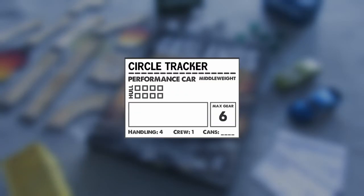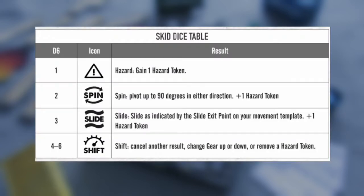Before finalizing your vehicle's move across the template, you are allowed to roll a number of skid dice. A vehicle can roll a number of skid dice equivalent to the number of its handling value. So in our case, the circle tracker would be able to roll four skid dice. Each skid dice rolled will give you a result, and you can use those results to do a number of things to your vehicle. Most of the time, you will be looking for shift results, as shift results allow you to change gear. A shift result can also cancel out any of the other results in a roll. You can also use extra shift results to remove hazards from your vehicle.